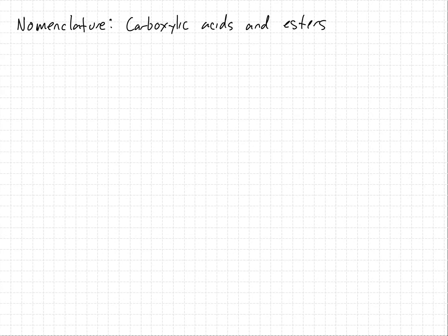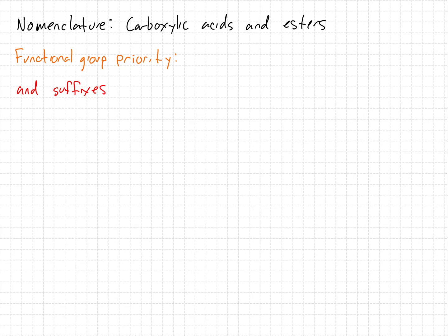Now that we're starting a new chapter, we're going to begin, as is tradition, with nomenclature. Here we're going to cover the nomenclature of carboxylic acids and some of their derivatives, specifically esters and amides. The first thing we need to do is expand our functional group priority list. We'll also cover the functional group suffixes for each group we'll be discussing, as well as substituent names for when they are not the parent functional group.